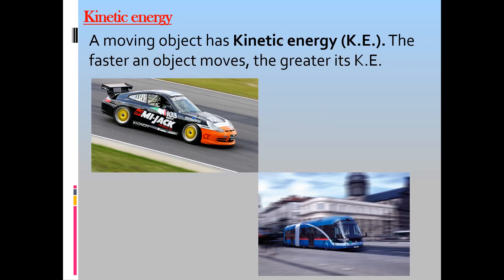An object can have two or more forms of energy at the same time. For example, a car with fuel inside has chemical energy, and because it is also moving, it also has kinetic energy simultaneously.